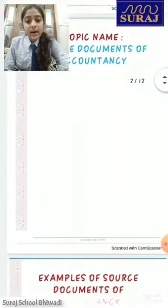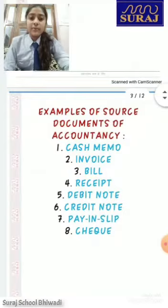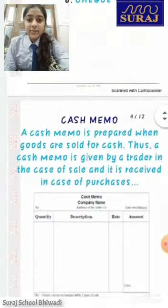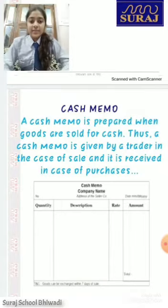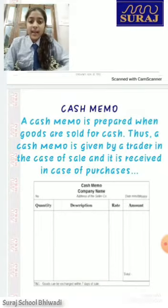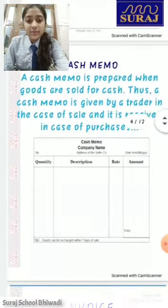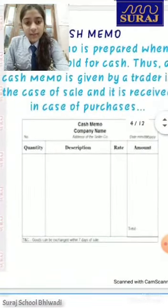There are many examples of source documents of accountancy. First one: cash memo. A cash memo is prepared when goods are sold for cash. A cash memo is given by a trader in the case of sale and is received in the case of purchase. This is the format of cash memo.